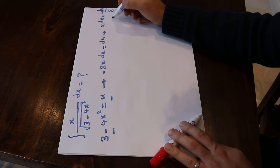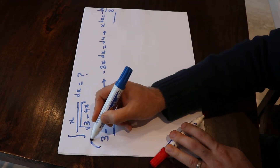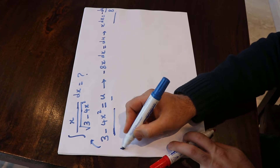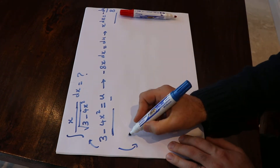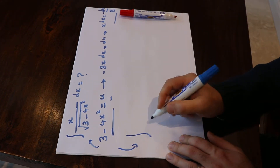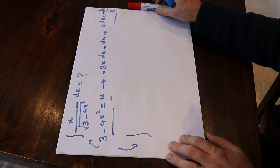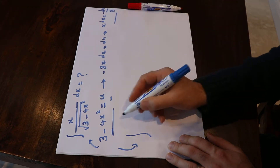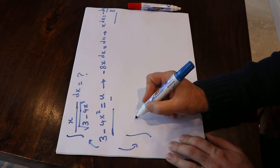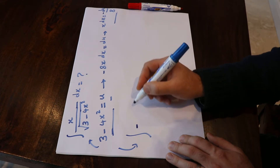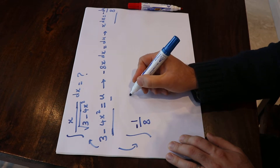So now if you substitute this into the integral, you can write that integral as: instead of x dx, I write minus du over 8.